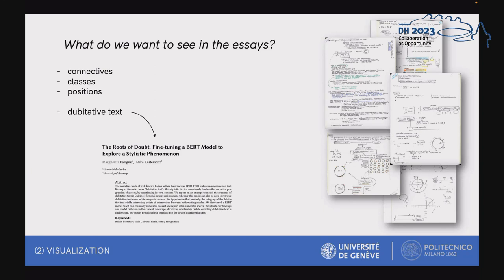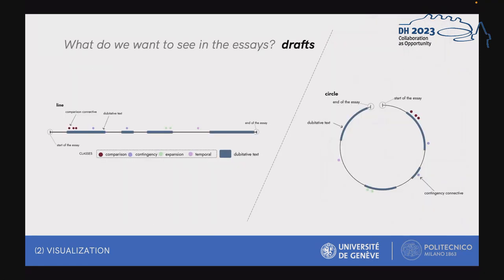Regarding how I was able to trace the presence of dubitative text in Calvino's essays, I invite you to look at the paper 'The Roots of Doubt: fine-tuning a BERT model to explore a stylistic phenomenon,' written under the supervision of Professor Mike Kestwon. I apologize for this shortcoming in the presentation. I needed to see two things in parallel — the dubitative text and the connectives — and after a series of prototypes and drawings, I envisioned the visual structure.